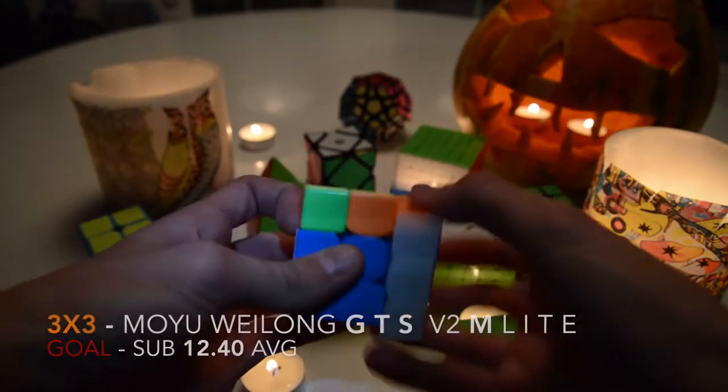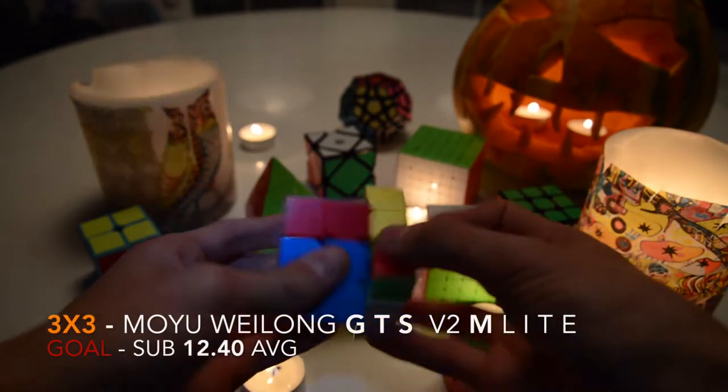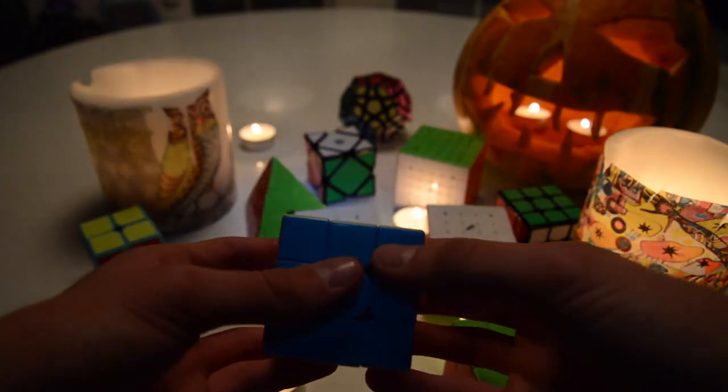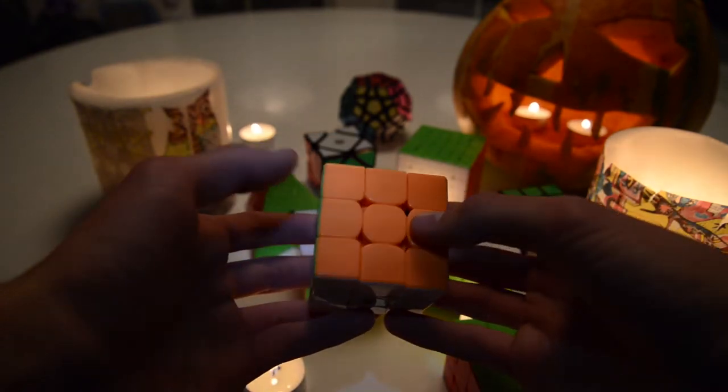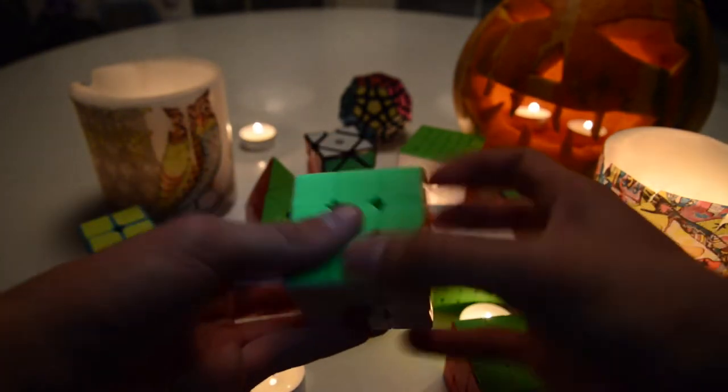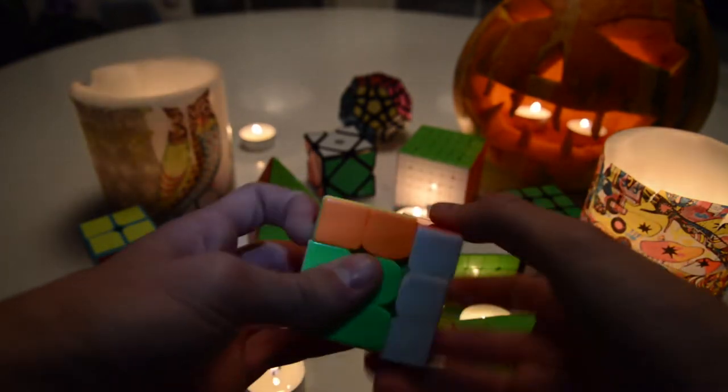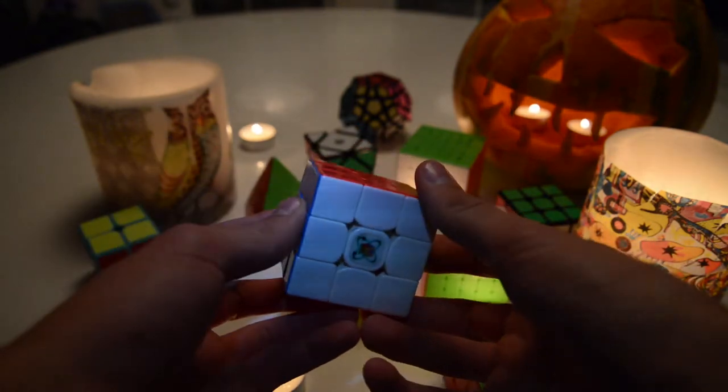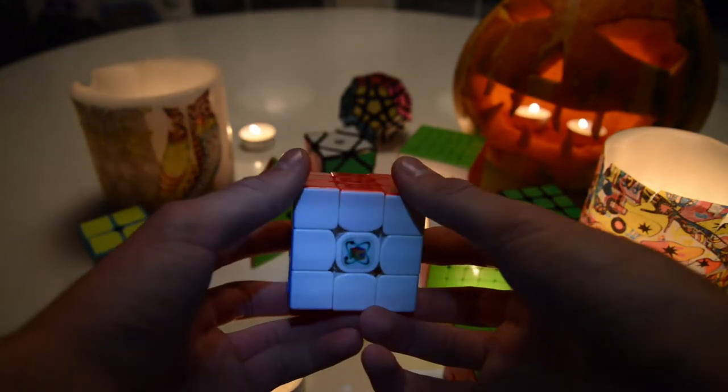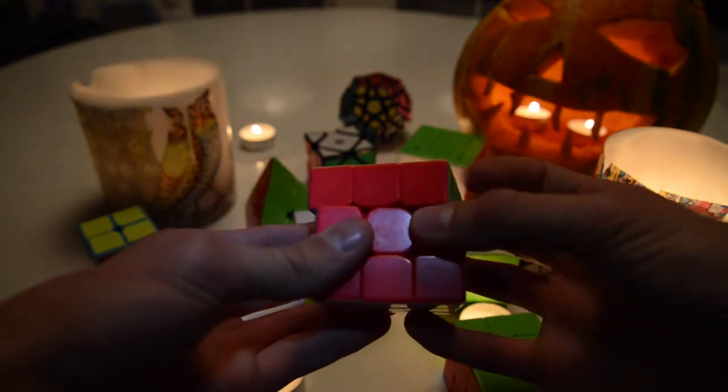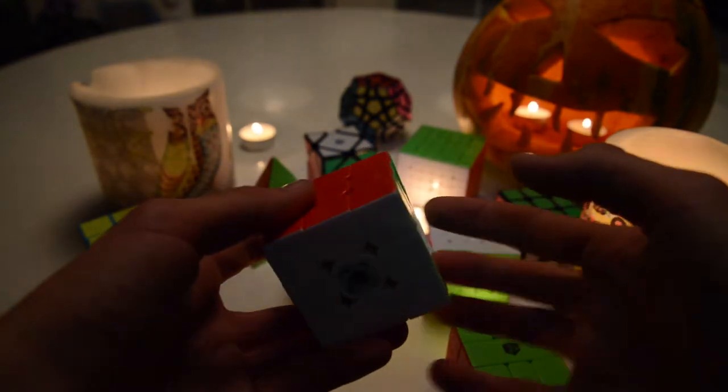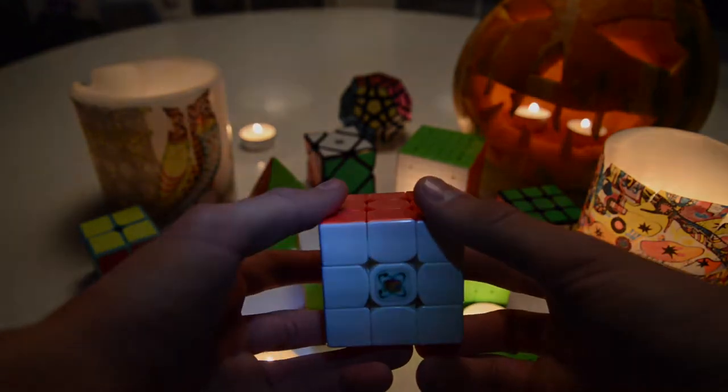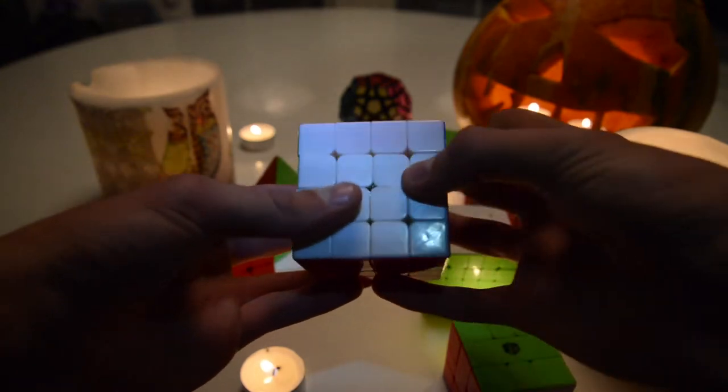In 3x3 my goal is to get a sub 12 average, around 12 second average. I'm fully capable of doing that and maybe a sub 11 single. It only depends on the lucky cases or scrambles I get, but I really hope I will not be nervous at the finals. I really can't wait for 3x3 because it's the most anticipated event.